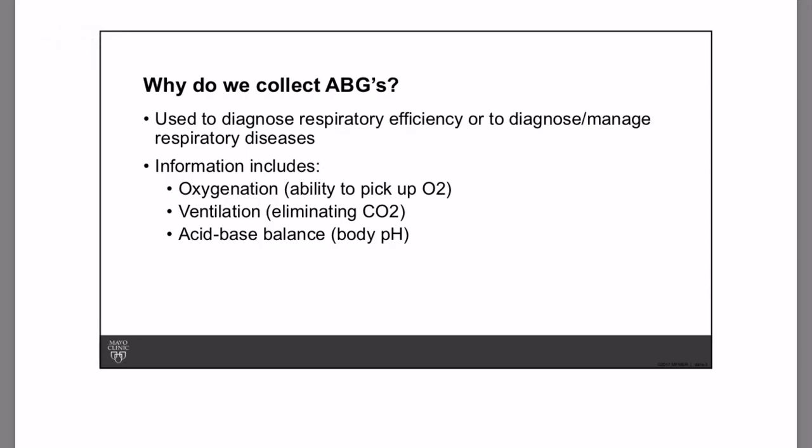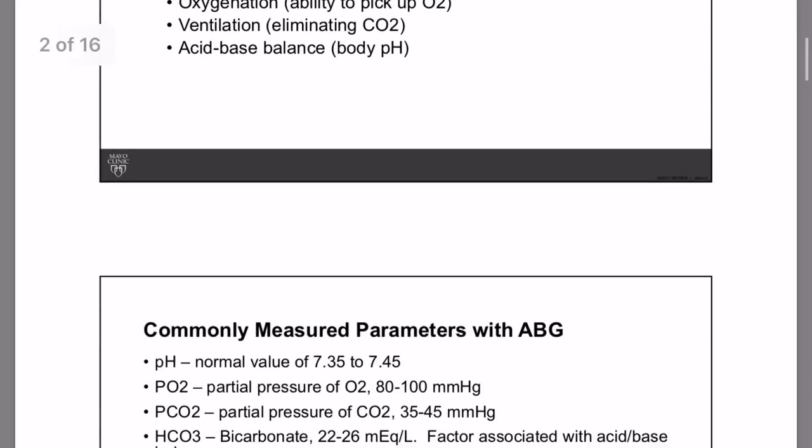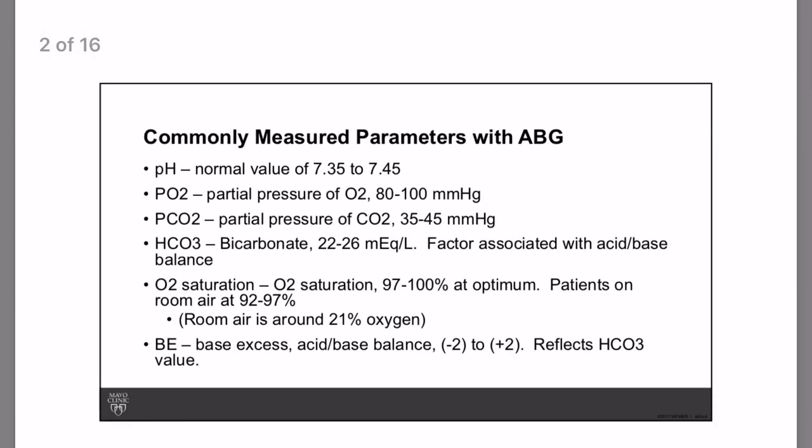The normal values obtained from an ABG are: pH 7.35 to 7.45, partial pressure of oxygen 80 to 100 mmHg, partial pressure of carbon dioxide 35 to 45 mmHg, bicarbonate 22 to 26 mEq/L, and oxygen saturation 97% to 100%. At optimum, a patient's room air should be at 92 to 97%.